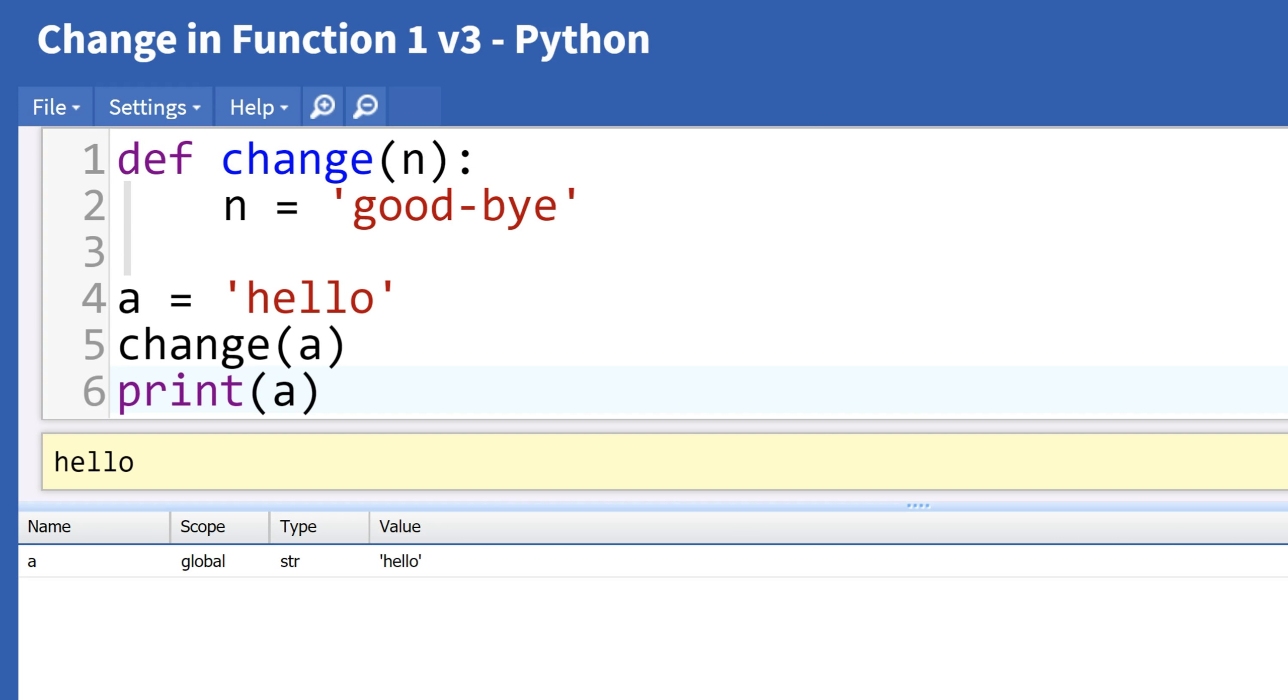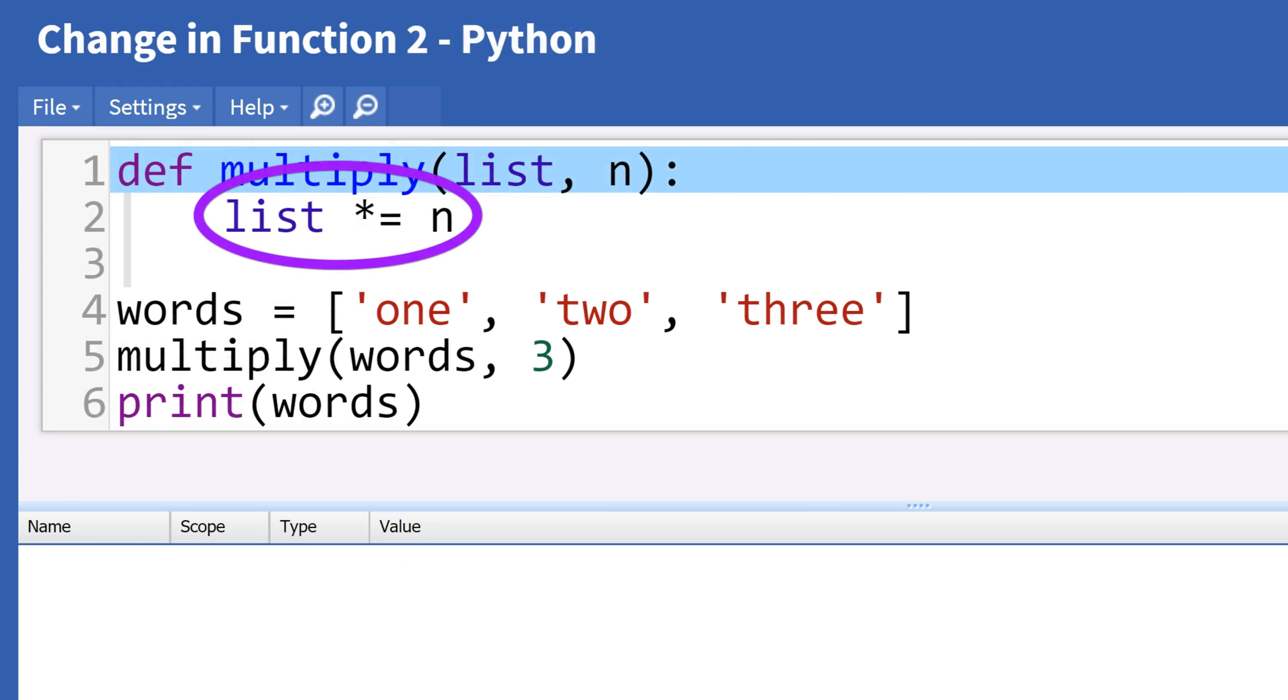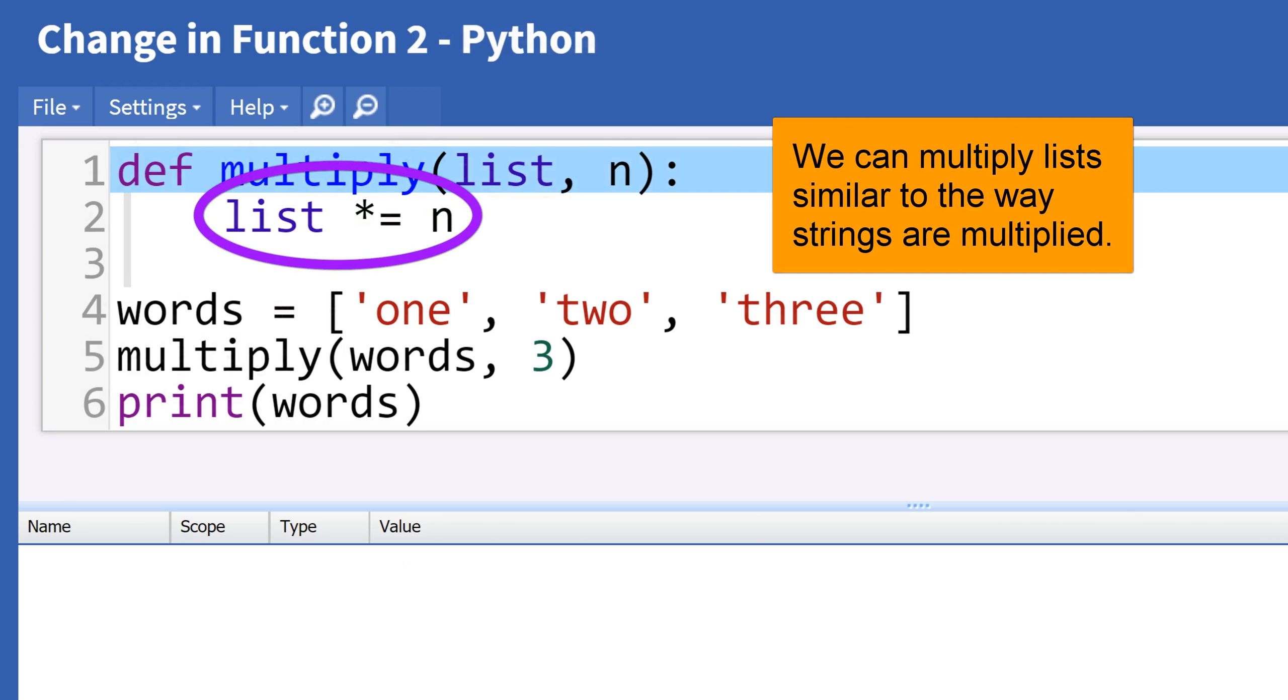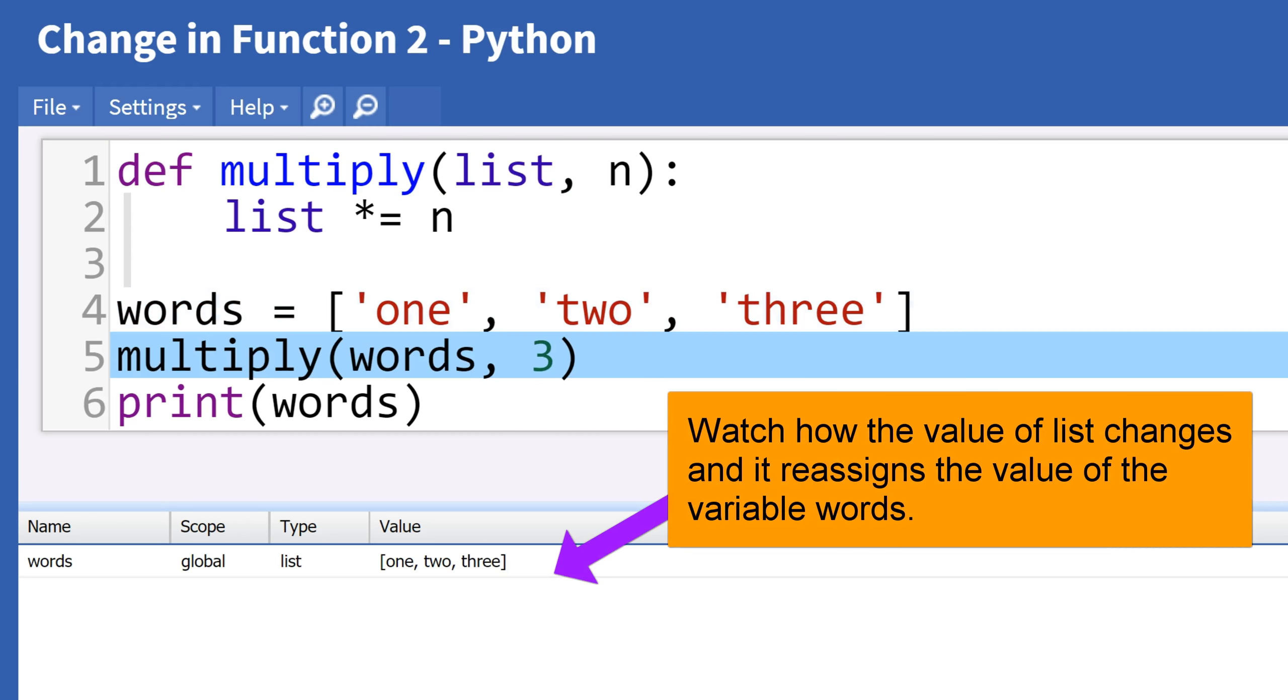Now let's try functions with lists. This function, multiply, multiplies a list in the same way strings are multiplied. The function did change the list, which now has nine items instead of three.